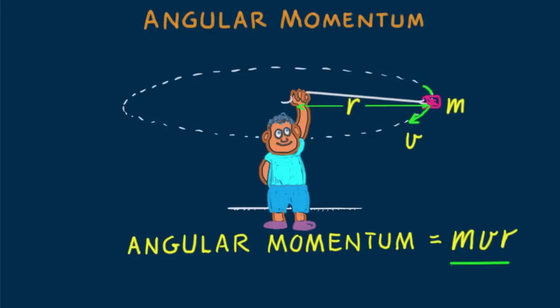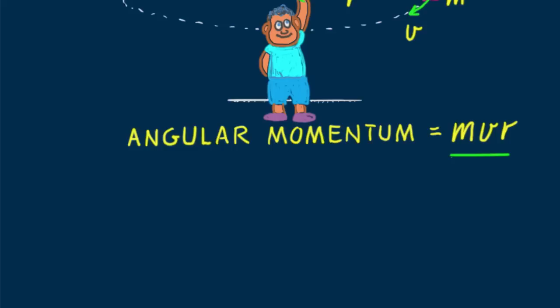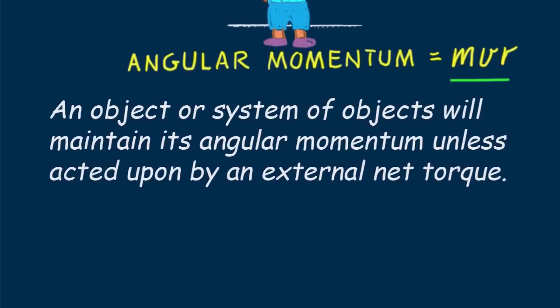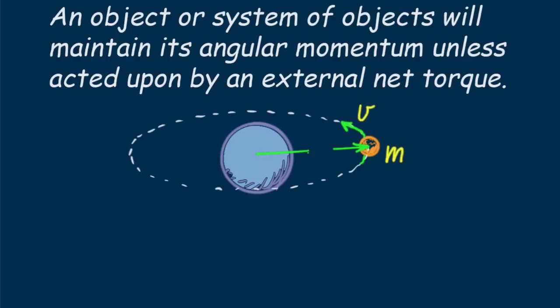Just as a net force is needed to change linear momentum, a net torque is needed to change the angular momentum of an object. An object or system of objects will maintain its angular momentum unless acted upon by an external net torque. A satellite orbiting a planet normally has no external torques acting on it and has a constant angular momentum. Multiply the mass of a satellite by its speed and the distance to the planet's center to find its angular momentum. That angular momentum will persist until some external torque acts on it — if no torque, it will continue in its motion indefinitely.